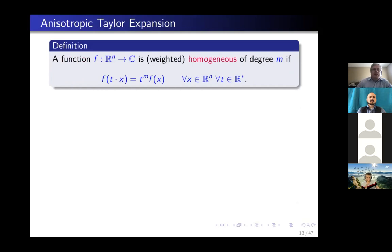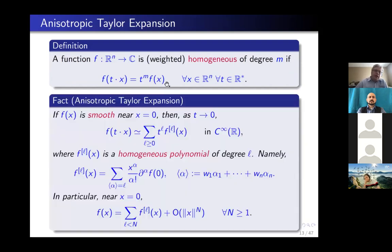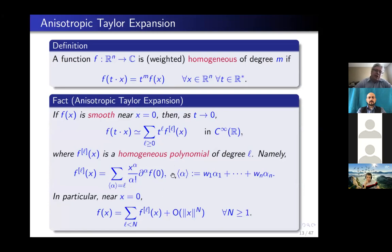I need to explain anisotropic expansions for functions, vector-valued maps, and vector fields. I say a scalar function is homogeneous of degree M if F(T · x) = T^m F(x). We have anisotropic Taylor expansions in terms of homogeneous polynomials, where homogeneity is meant with respect to this notion. One way to state this: if you look at F(T · x) as T goes to zero, you have an asymptotic expansion Σ T^l F_l(x), where each component F_l is a homogeneous polynomial of weighted degree l.